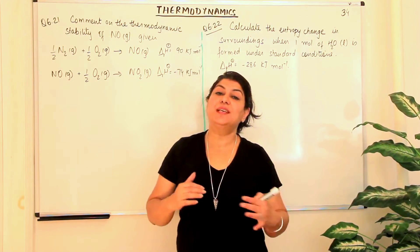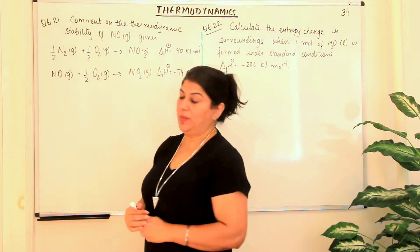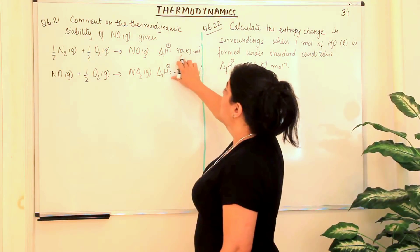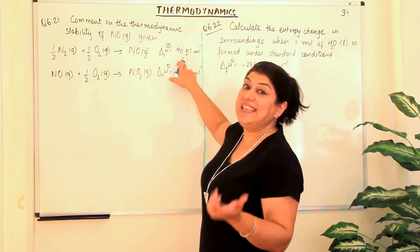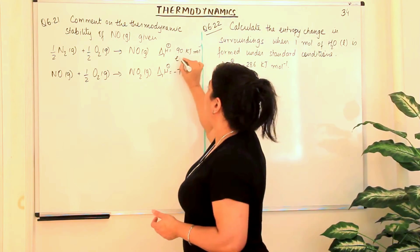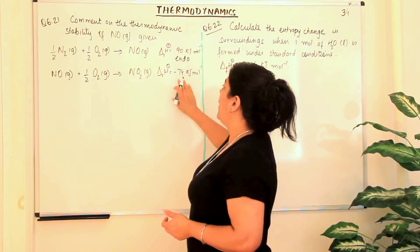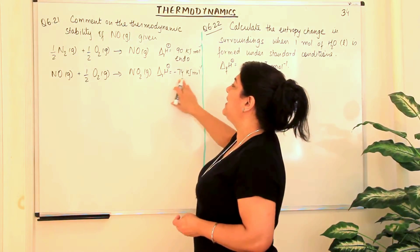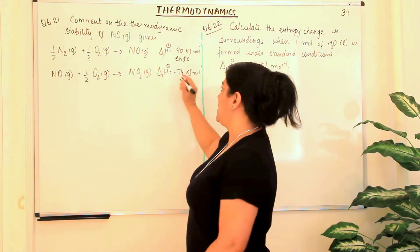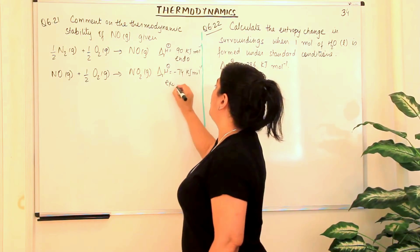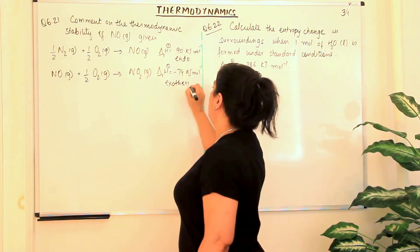By the value of delta H, you get to know whether a reaction is endothermic or exothermic. This first reaction has a positive value of delta RH, which means that energy is increasing. Therefore, this reaction is endothermic. While here, it is a negative value, which means this much heat was given out in this process. Therefore, this is an exothermic process.